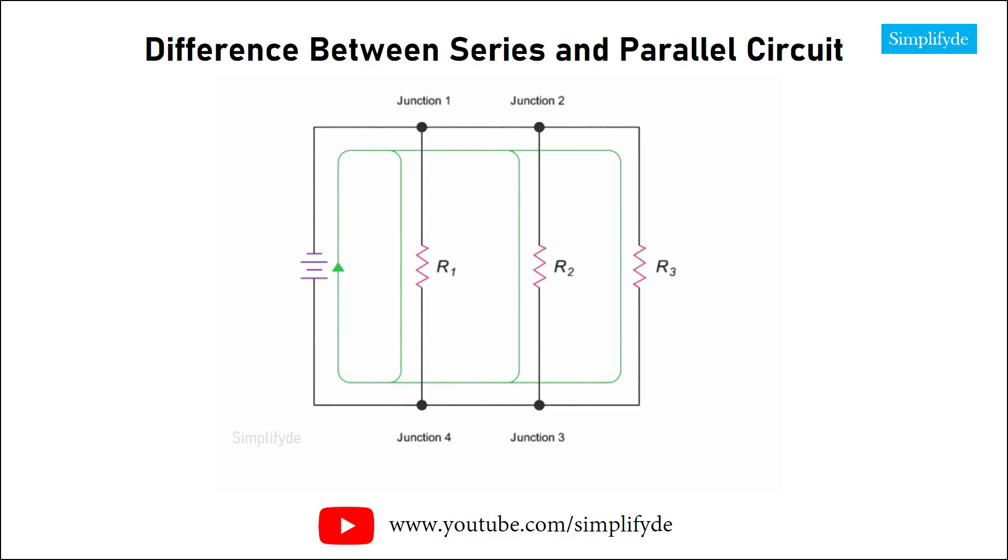For example, look at these ammeter readings at the various branches and junctions of a parallel circuit with a source current of 10 amps. As the 10 amp current travels away from the source, it splits at junction 1 into 2 branches that have currents of 2 amps and 8 amps. The circuit branches again at junction 2, and the 8 amp current splits into 3 amps and 5 amps.